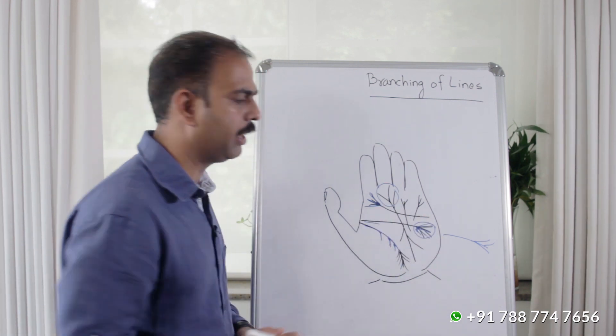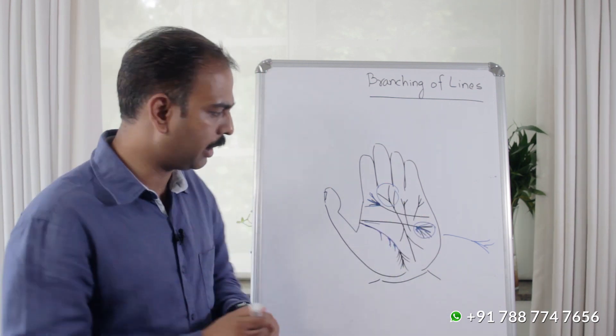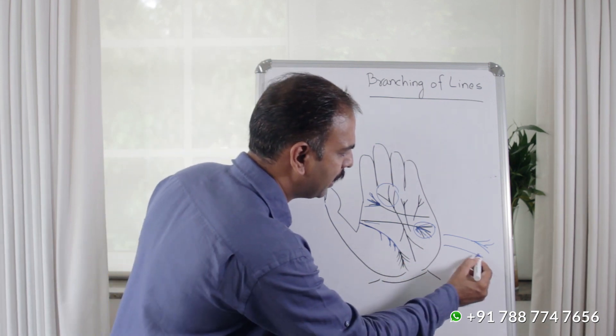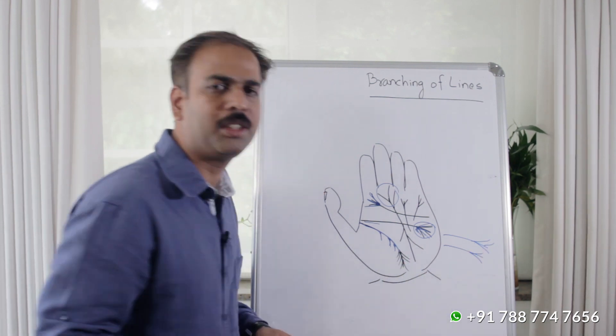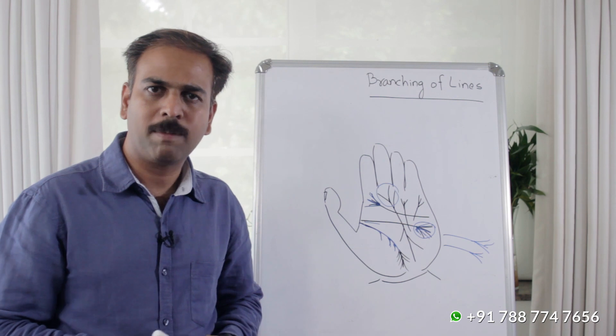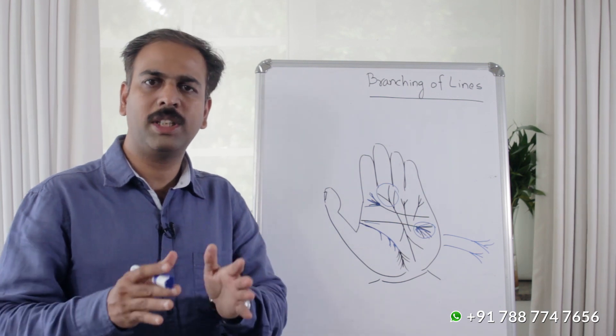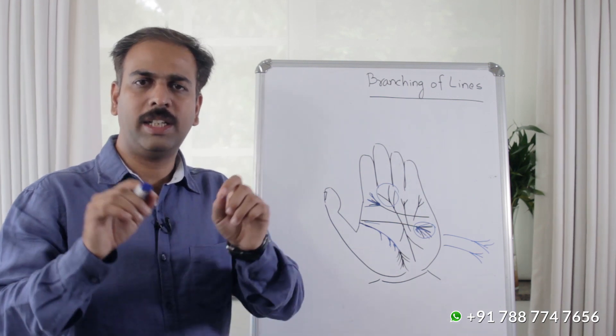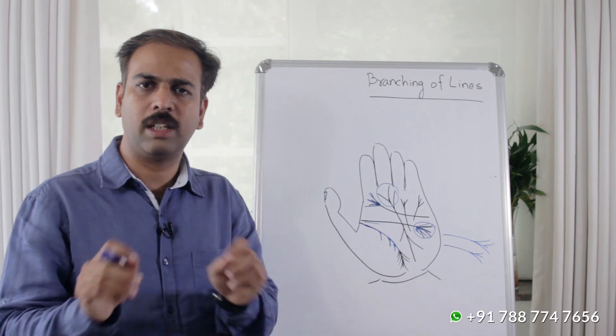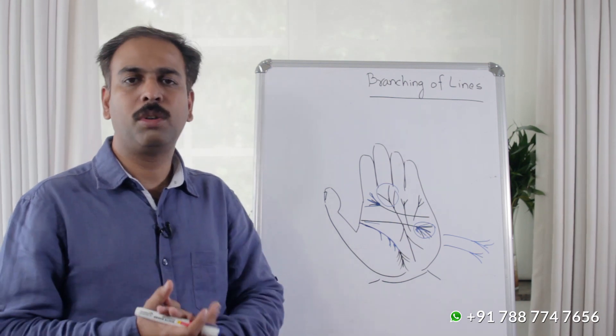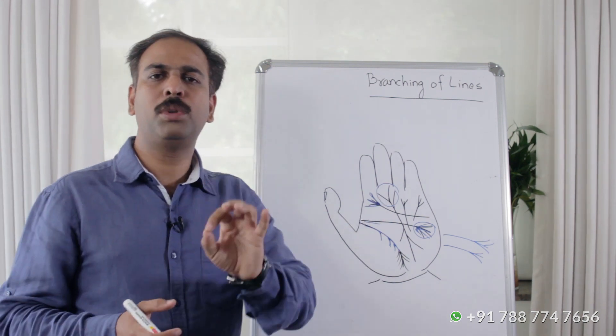Now let's look at the head line. If the head line ends in two or three branches, and if the intensity, deepness, and color remain the same, then it is very powerful.